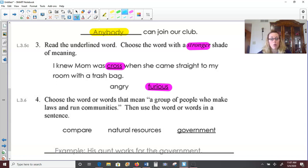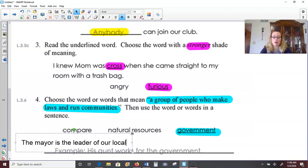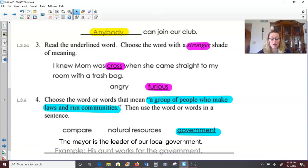Number four, choose the word or words that mean a group of people who make laws and run communities. Sounds like our social studies unit this year. So would that be compare, natural resources, or government? A group of people who makes laws and run our communities would be our government. And then they wanted you to use an example, that word in a sentence. They have, his aunt works for the government. Now, lots of sentences we could write here. How about, the mayor is the leader of our local government. You could say the president is the leader of our national government. You could say that the government is made up of three branches. Remember learning about that, judicial, legislative, and executive. So see if you can come up with a sentence using the word government.